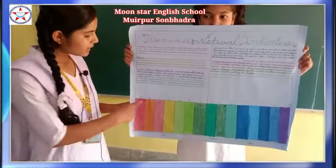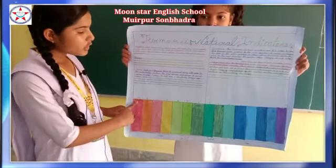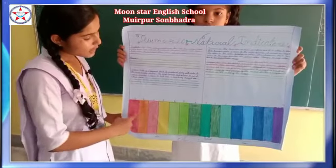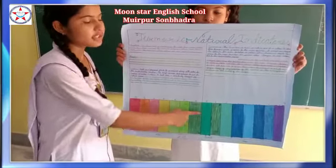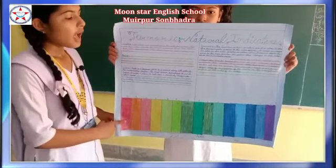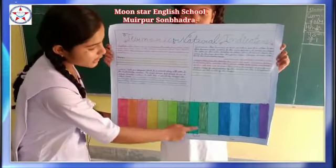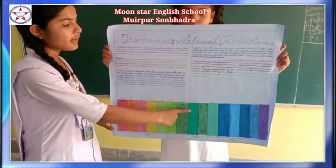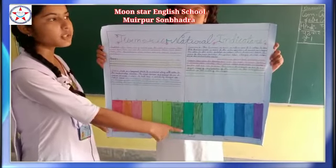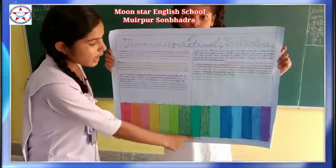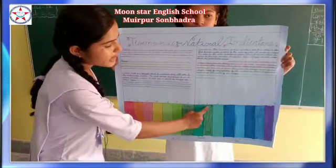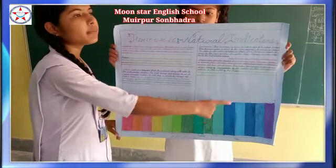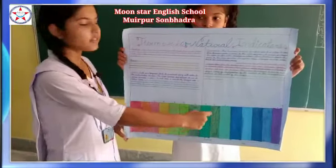Now you can see that 0 to 7 the number will be acidic substance. And 7 is a neutral substance. If any color is dark green then the substance will be neutral. And 8 to 14 the substance will be a basic substance.